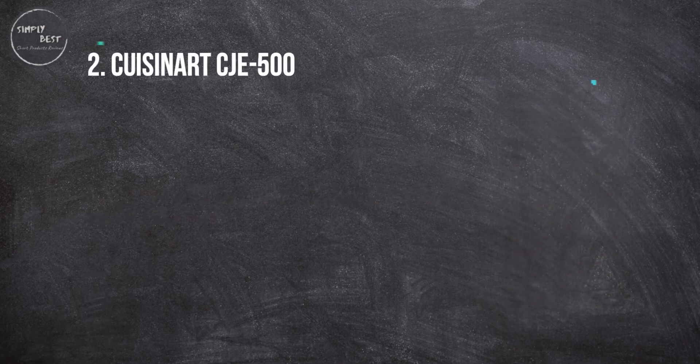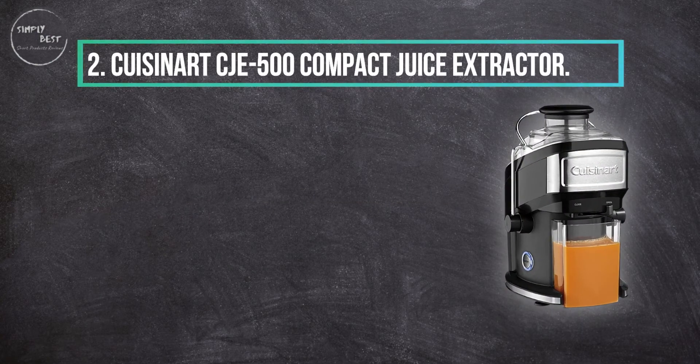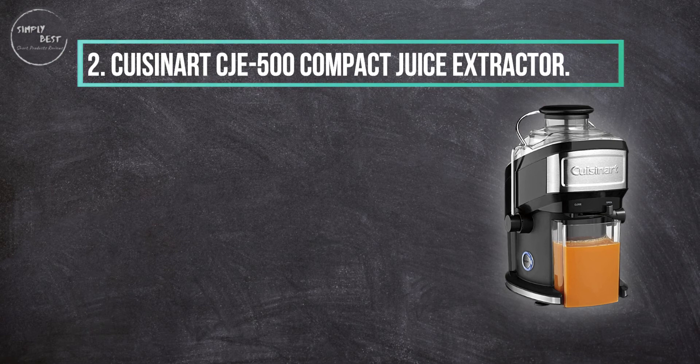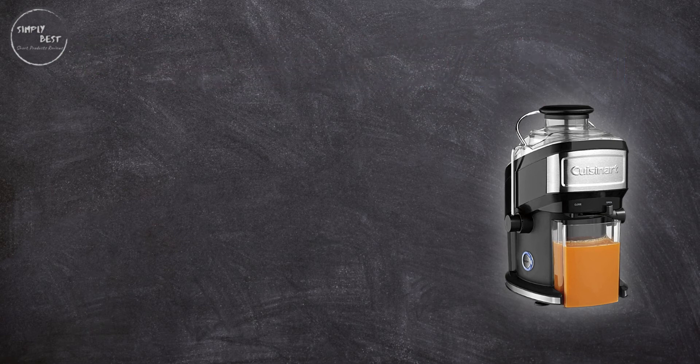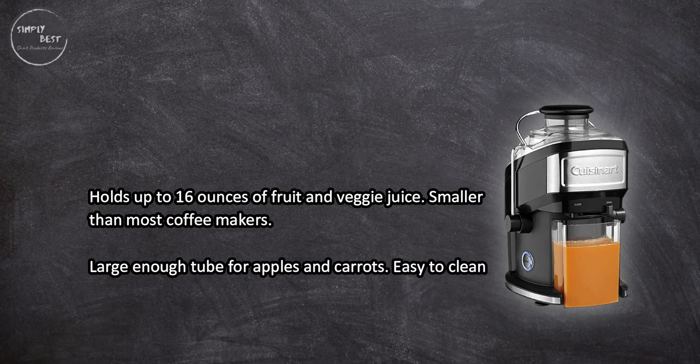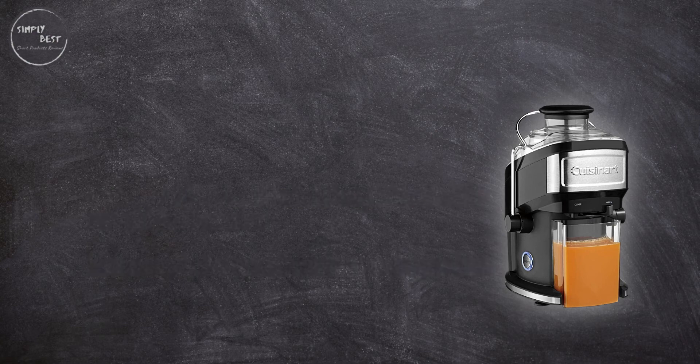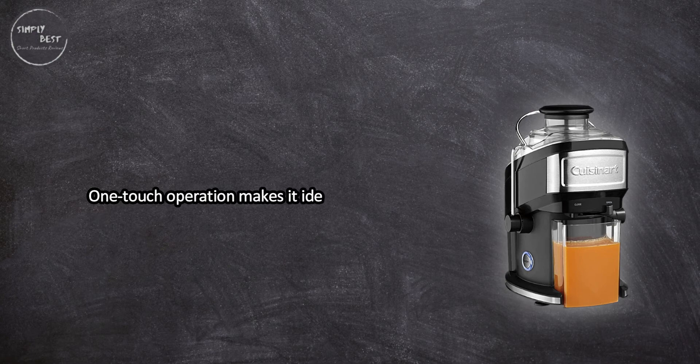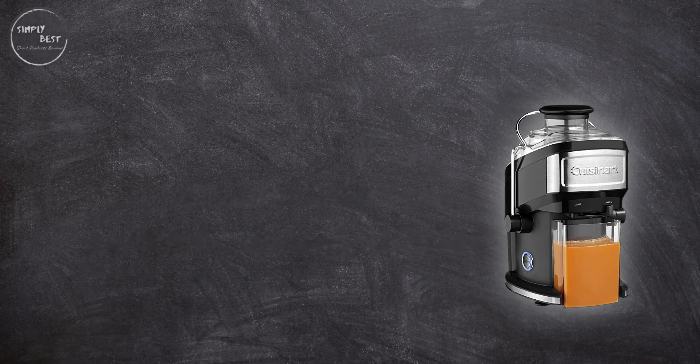At number two, Cuisinart CJ-500 Compact Juice Extractor. Holds up to 16 ounces of fruit and veggie juice, smaller than most coffee makers. Large enough tube for apples and carrots. Easy to clean. One-touch operation makes it ideal for beginners. Best option for those without a lot of countertop space. Doesn't work great for leafy greens like spinach and kale.